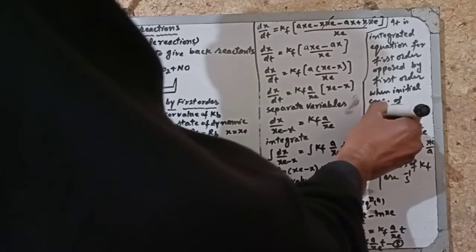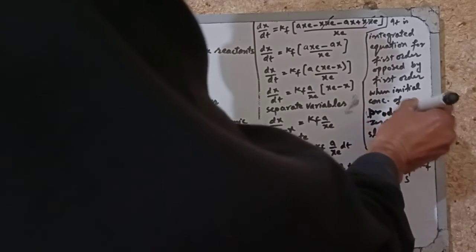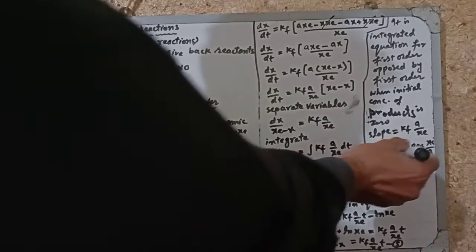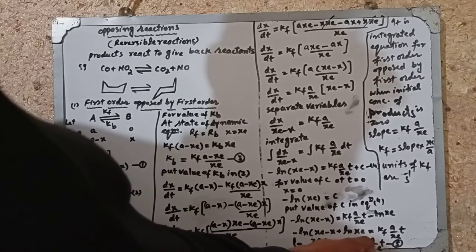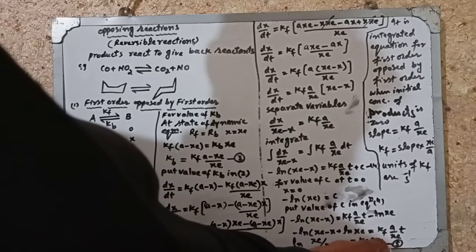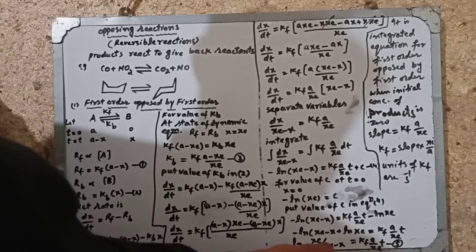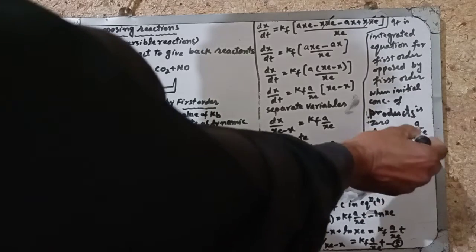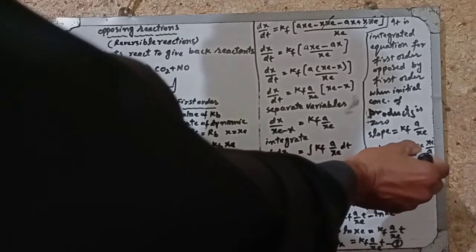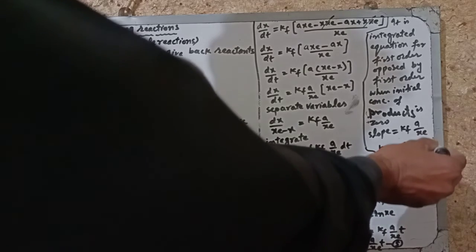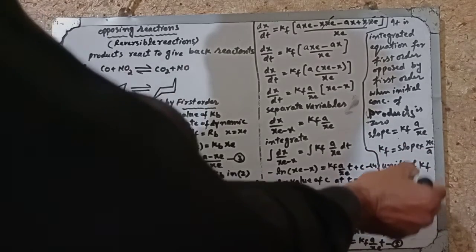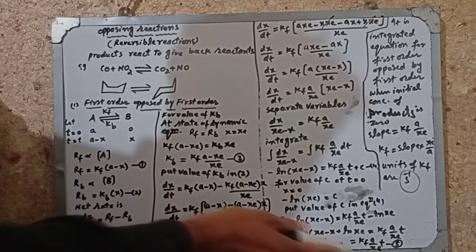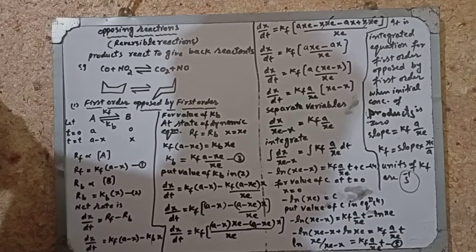This is a straight line equation. Plotting ln(xe/(xe minus x)) on the y-axis against t on the x-axis, the slope equals kf·a/xe. Therefore kf can be calculated as slope multiplied by xe/a. The units of kf work out to per second, as all other units cancel.